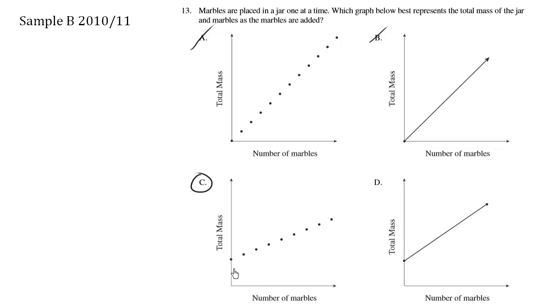The second key concept is that as you add more marbles, the mass increases. However, there's no such thing as half a marble. Choice D is incorrect because a solid line implies you can have 1.5 marbles, but in reality that's impossible. That's why we have dots instead.